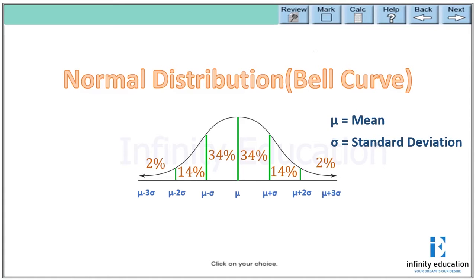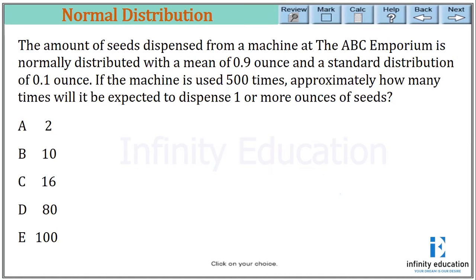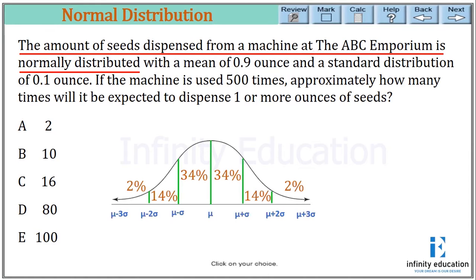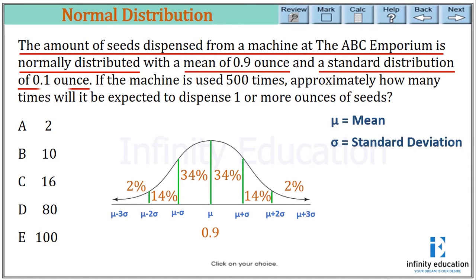Now let's do some examples so that the concept of normal distribution or the bell curve will be much clearer. The amount of seeds dispensed from a machine at ABC Corporation is normally distributed with a mean of 0.9 ounces and a standard deviation of 0.1 ounces. If the machine is used 500 times, approximately how many times will it be expected to dispense one or more ounces of seeds? Since the distribution is normal, we draw the bell curve with mean 0.9 ounces.